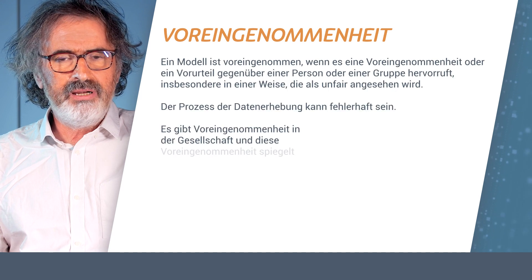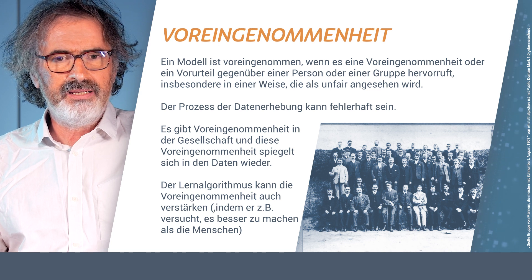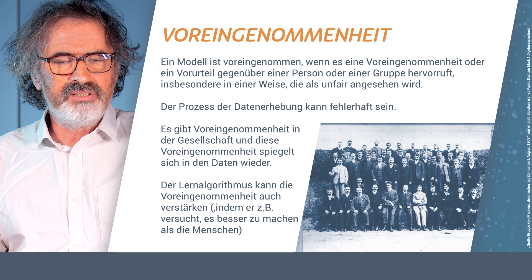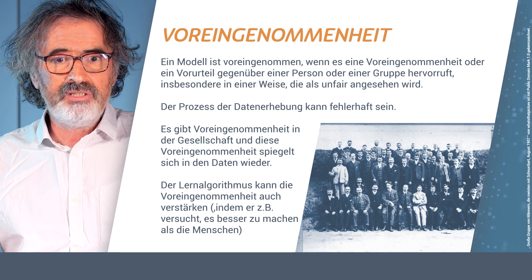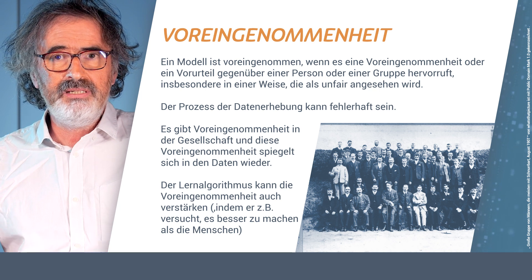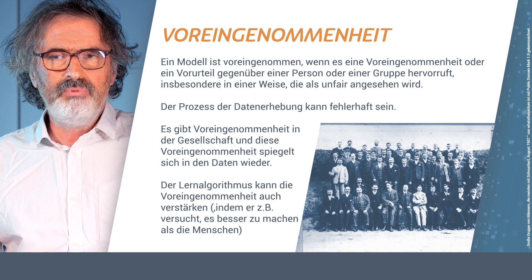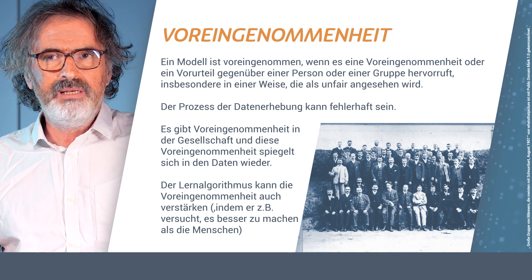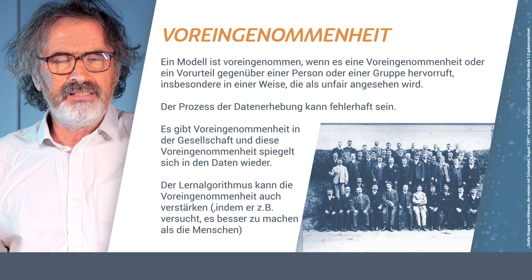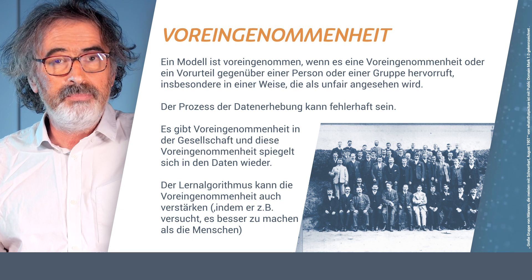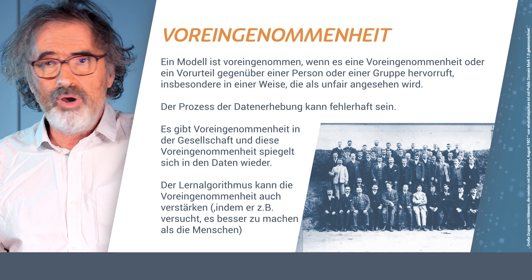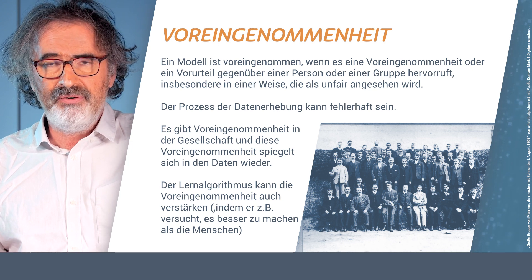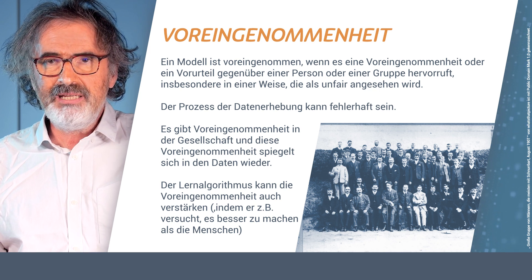An important question when you do testing is to look out for bias. Bias is the term employed when we use a model which is going to create either a positive inclination or a negative prejudice against either one individual or a group of individuals — and usually we will consider this to be unfair. Bias can appear in a number of ways. The process of data collection could be to blame — we may have only collected data from one particular subgroup. But also there is just bias in society, and therefore the data we collect, however fairly, will contain the bias that is in society.